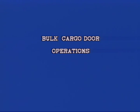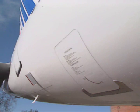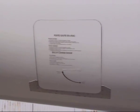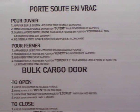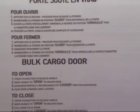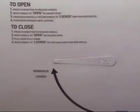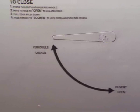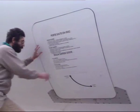Bulk cargo door operation. The bulk cargo compartment door is installed on the lower right side of the fuselage. The bulk door is a manually operated door. The operating procedures are labeled on the door.